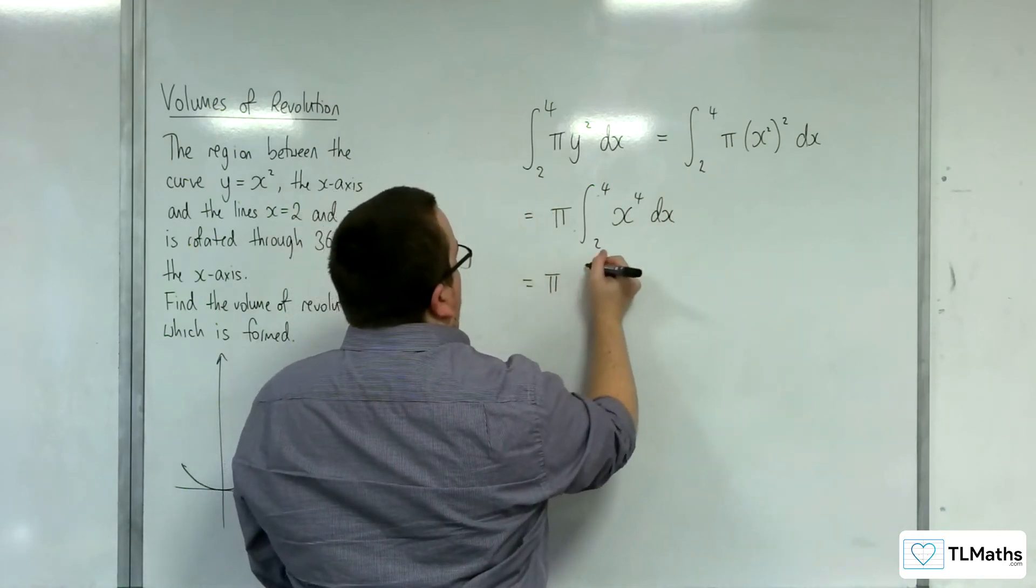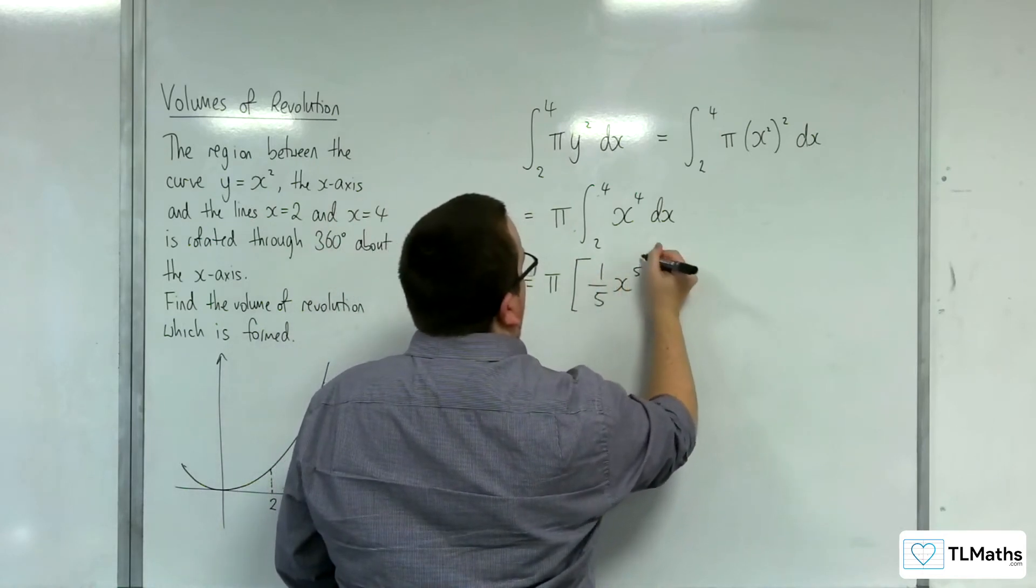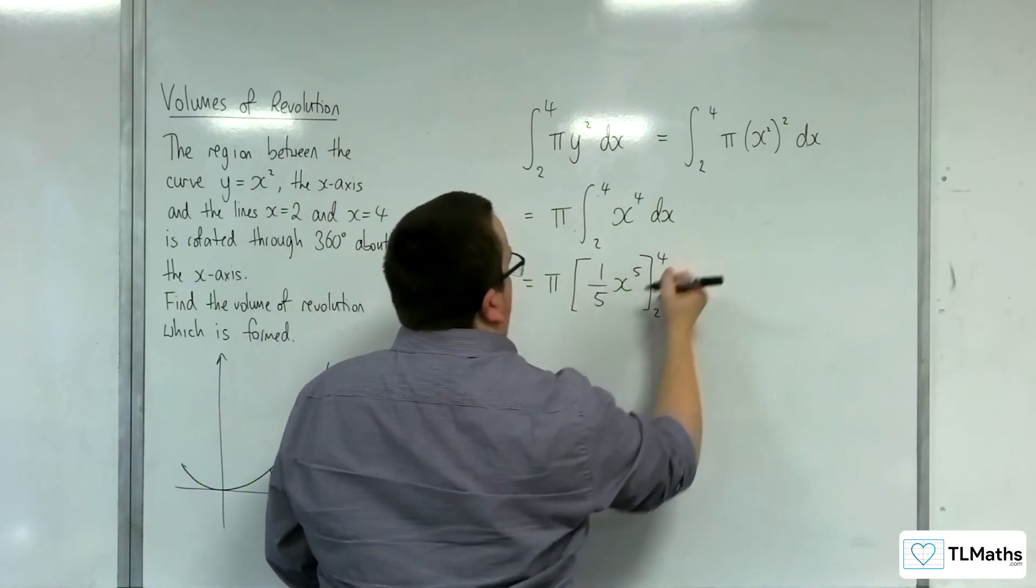So now we can integrate that. So it's pi times the integral of x to the 4, which is 1 fifth x to the 5, evaluated between 2 and 4.